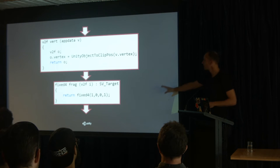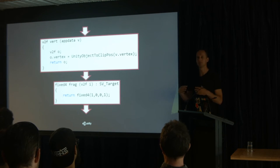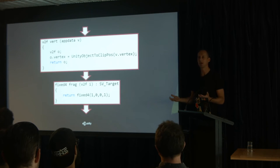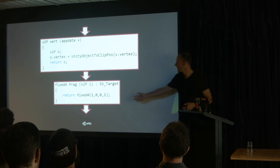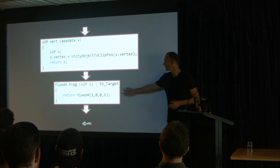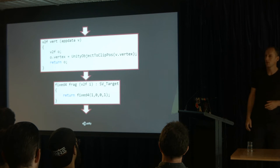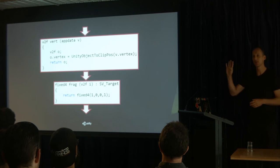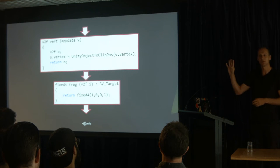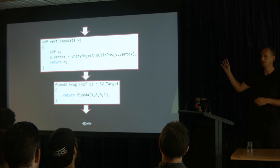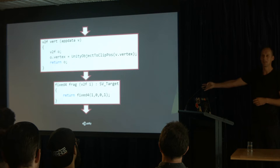The next step is we say what colour this pixel is going to be. Here is our fragment shader — we're going to return something called a fixed4. That's four numbers: red, green, blue, and our alpha value. So this shader just makes something red.